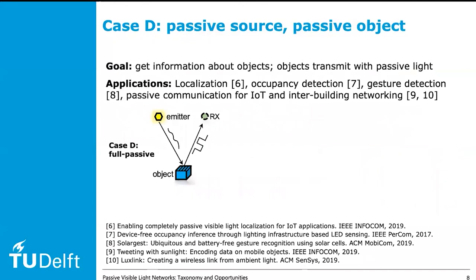Case D is the most complicated. Here, the photo detectors are deployed in the environment, not on the objects. As a result, the presence of passive objects means the goal is the same as in Case C: getting information about the object. However, we do not have an active source to modulate information. Therefore, the only source of information is the reflections caused by the surface of the object. This scenario leads to a complex problem: noisy generation of information because there is no active source, and noisy reception because the signals are reflected. Researchers are developing applications leveraging people and hands as passive objects, enabling applications such as gesture recognition, event detection, and passive visible light communications. The challenges described in Cases B and C also apply here.